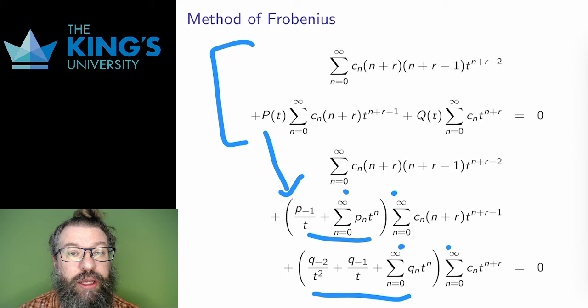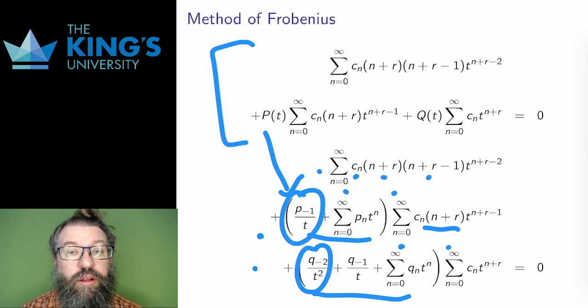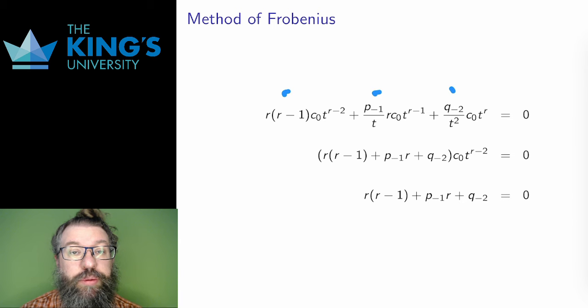However, I can get some insight by looking at the t to the r minus 2 coefficient. That's the first term of each of these three series, n equals 0 in each. In the first series, this will be C0 times r times r minus 1. In the second, it will be the product of the first two terms here, which is going to be P negative 1 times r times C0. And for the third, the coefficient again shows up in the first term of each series multiplied together, so I get Q negative 2 times C0. These are the three terms that I will pull out. These must be equal to 0. These are the coefficients of t to the r minus 2, and all coefficients must be 0.